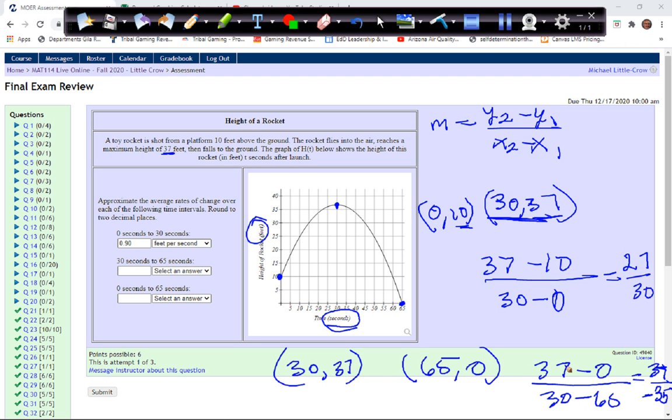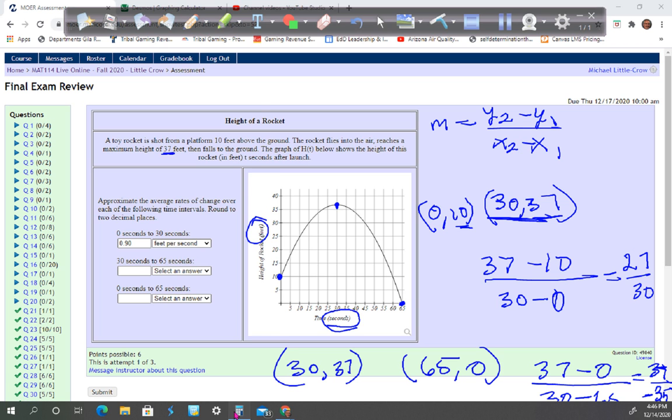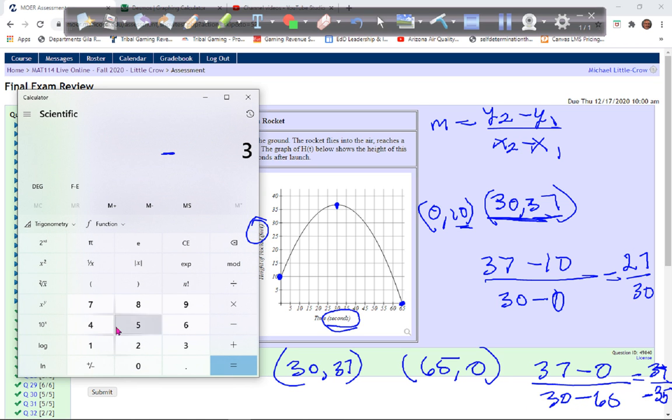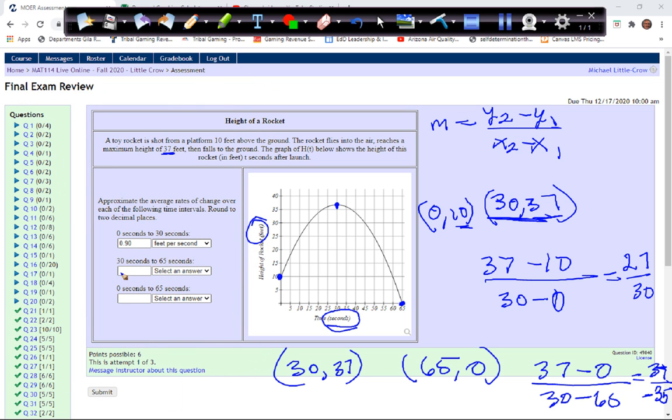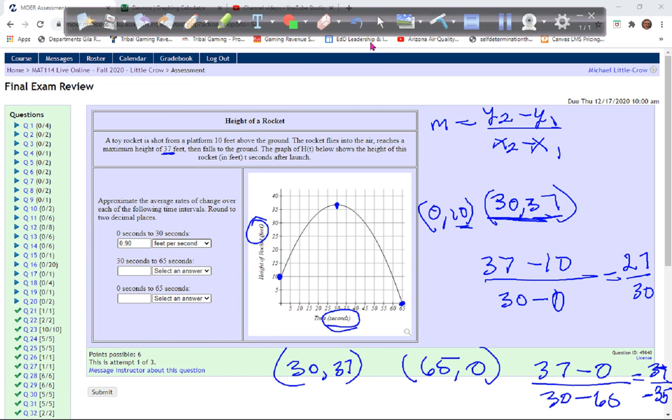So 37 over 35, we'll get 1.06, to two decimal places, 1.06. And again, that is also in feet per second.